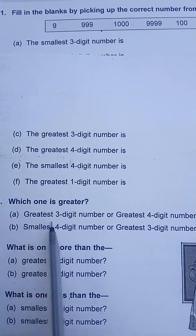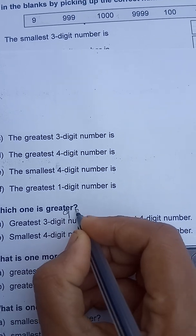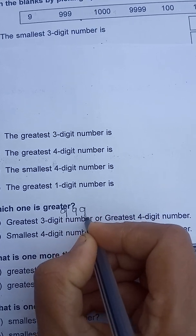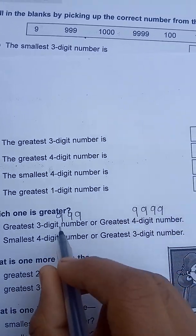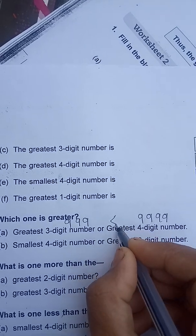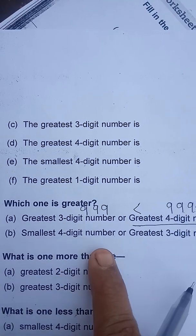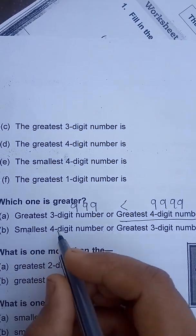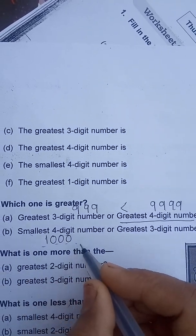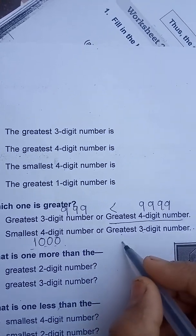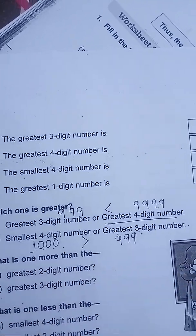Which one is greater: greatest three-digit number or greatest four-digit number? The greatest three-digit number is 999 and the greatest four-digit number is 9999 — obviously the four-digit number is greater. Smallest four-digit number or greatest three-digit number? The smallest four-digit number is 1000, and the greatest three-digit number is 999 — so 1000 is greater.